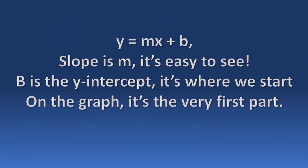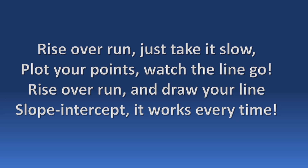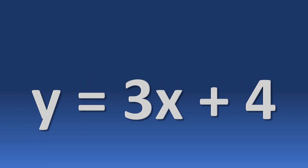y equals mx plus b — slope is m, it's easy to see. b's the y-intercept, where we start on the graph, is the very first part. Rise and run: just take the slope, plop your points, and watch the light load. Rise and run, then draw your line — slope intercept works every time.